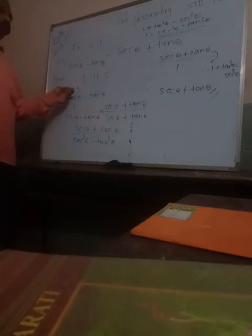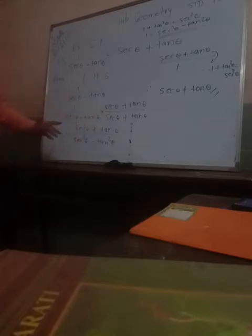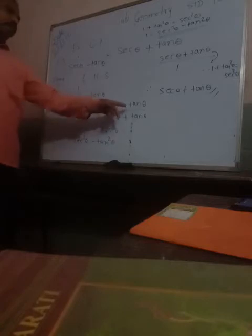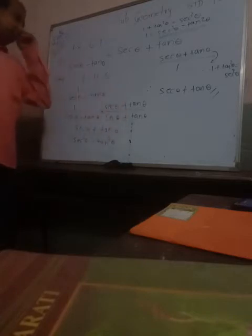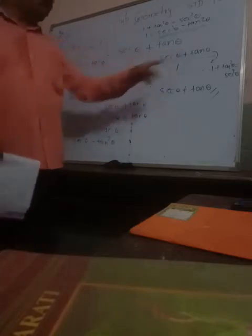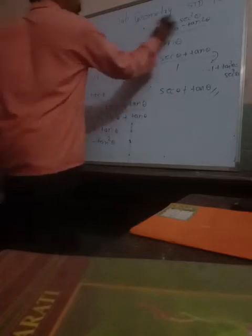What is the LHS? 1 upon sec theta minus tan theta. There is nothing else to do, that's why we take the reciprocal. From the reciprocal, 1 is multiplied with sec theta plus tan theta, and sec theta minus tan theta times sec theta plus tan theta gives 1 in the denominator. So we get our answer: sec theta plus tan theta. Proof complete.